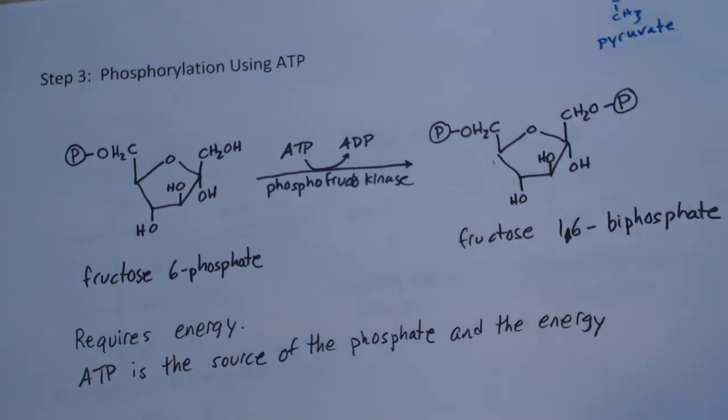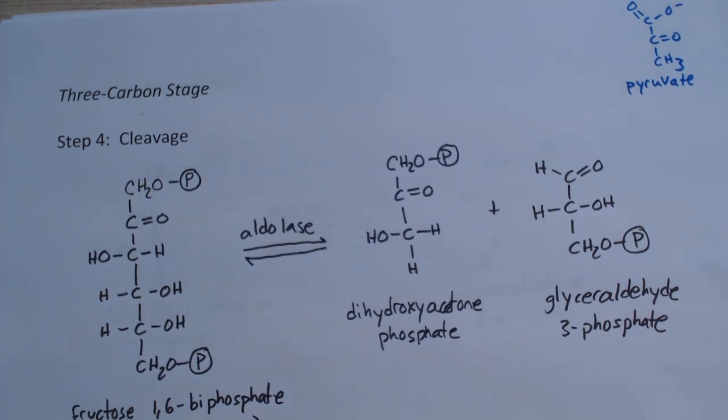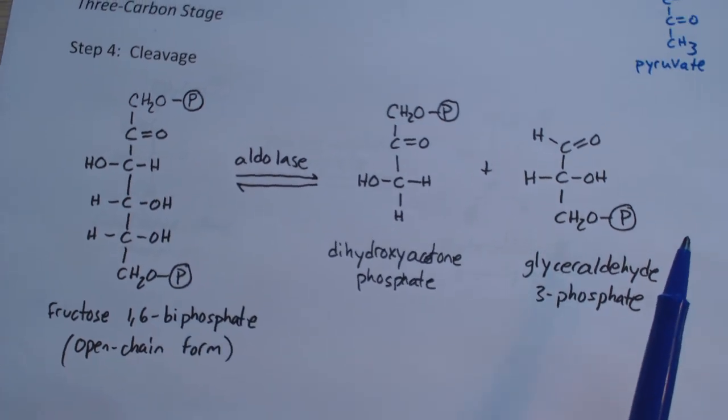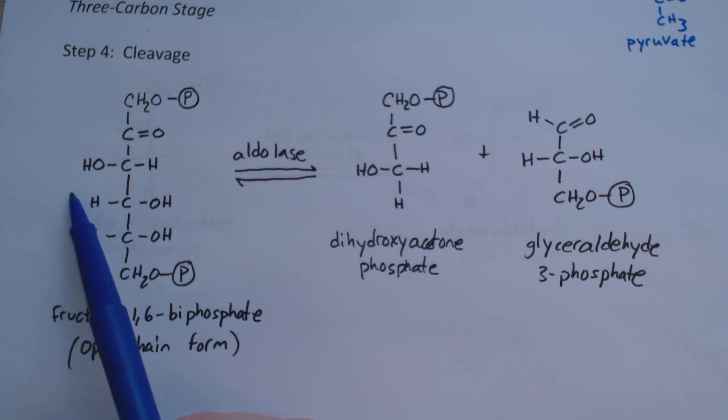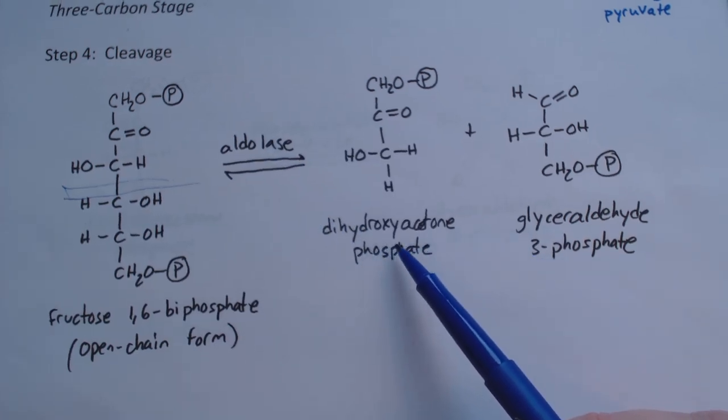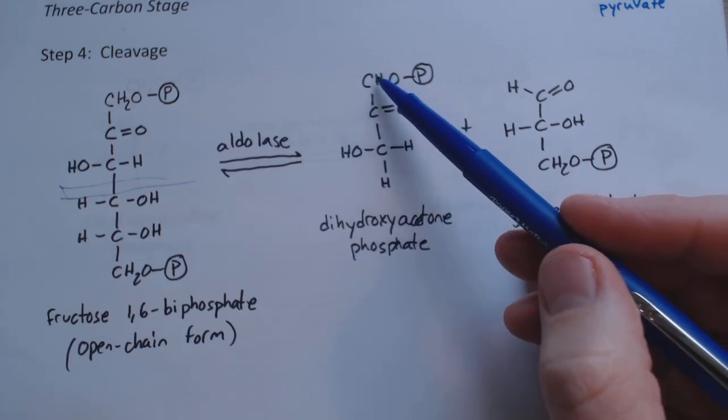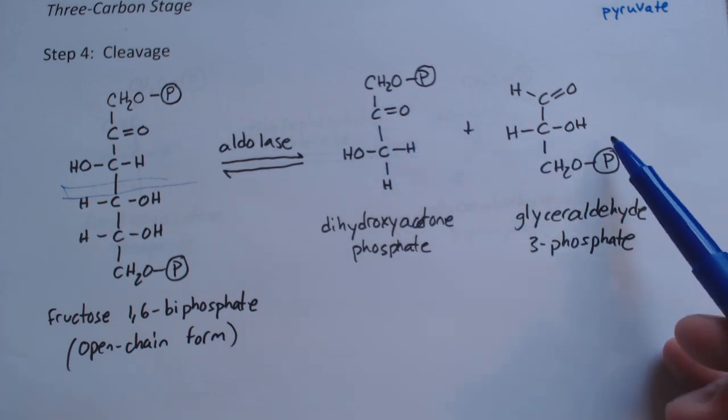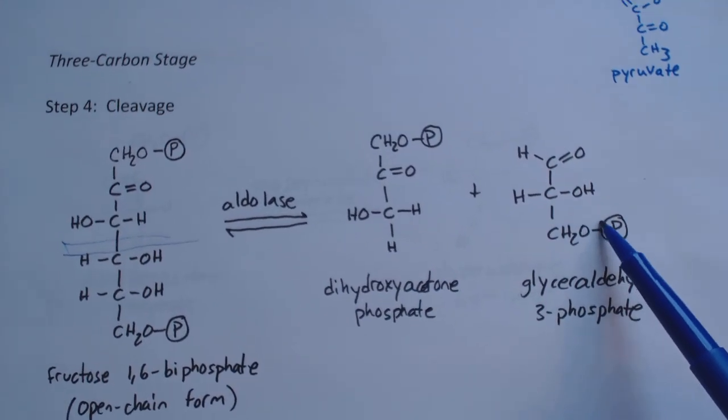Now we're into the three-carbon stage. The fructose ring opens up, and once it's in the open chain form, you see a lot of symmetry. We're going to slice right through and break the bonds with aldolase as the enzyme, creating dihydroxyacetone phosphate plus glyceraldehyde-3-phosphate. They each have three carbons and are starting to look more like pyruvate. Of the two, glyceraldehyde-3-phosphate looks more like the pyruvate.